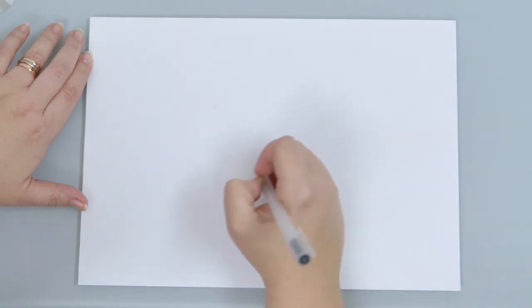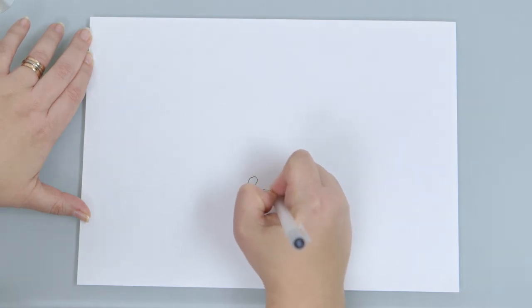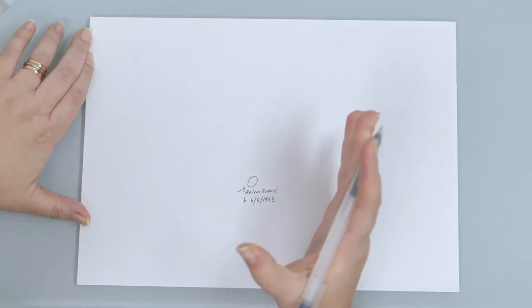So Helen, if I could just confirm your details. You're Helen Evans, that's correct? Yes. Okay and Helen, what's your date of birth again? That's the 6th of May 1963. Okay, and you've got no health problems that you're concerned about at the moment? No, not at all.